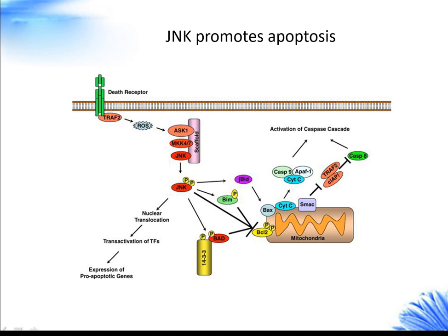There, JNK can phosphorylate the BH3-only family of BCL2 proteins to antagonize the anti-apoptotic activity of BCL2 or BCLXL. In addition, JNK can stimulate the release of cytochrome C from the mitochondrial inner membrane through a BID-BAX-dependent mechanism, promoting the formation of apoptosomes consisting of cytochrome C, caspase 9, and APAF1.